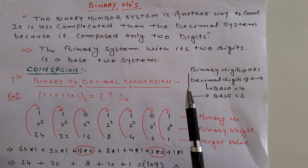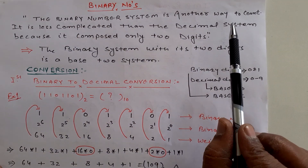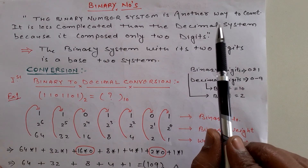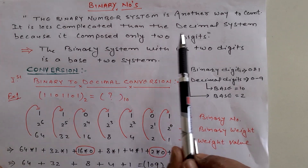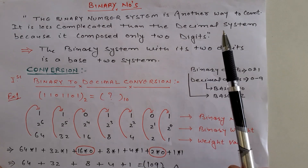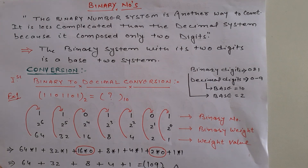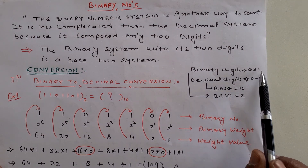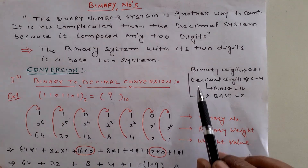Today we are discussing the binary number system. Binary number system is less complicated than the decimal system because it consists of only two digits — zero and one. That's why the base of binary is two.